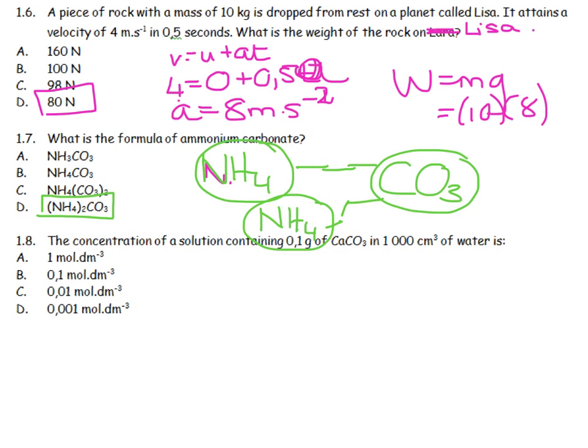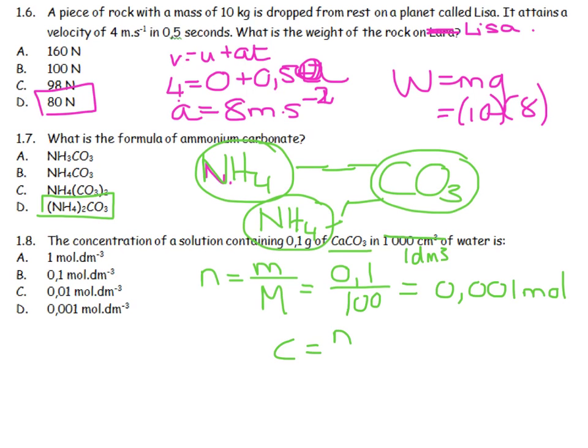The concentration of a solution containing that mass of calcium carbonate in that volume is going to be number of moles is equal to mass over molar mass. 0.1. The molar mass of calcium carbonate is 40 plus 12 plus 48, so that comes out to be 100. And therefore, you land up with 0.001 moles. Now, you are going to divide that by, this is 1 decimeter cubed. So, concentration equals number of moles divided by volume. 0.001 divided by 1, and I land up with 0.001 moles per cubic decimeter.